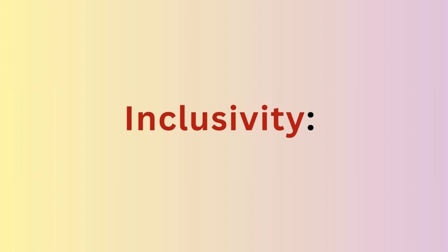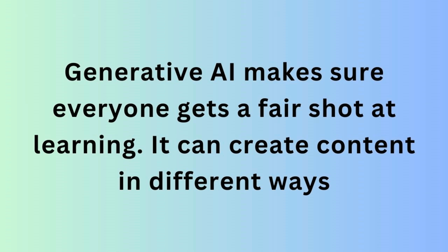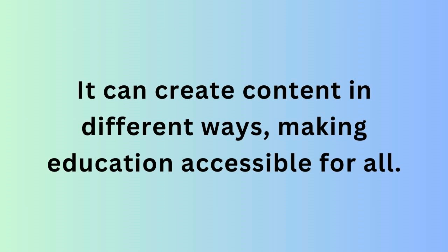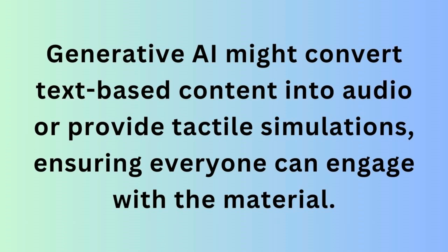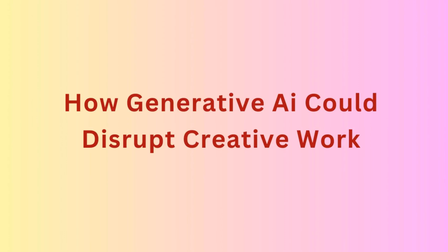Next is Inclusivity. Generative AI makes sure everyone gets a fair shot at learning. It can create content in different ways, making education accessible for all — no one is left behind. For example, for students with visual impairment, Generative AI might convert text-based content into audio or provide simulations, ensuring everyone can engage with the material.